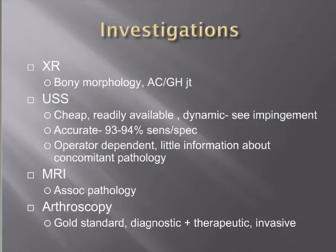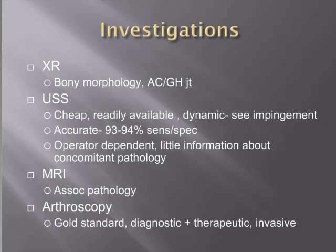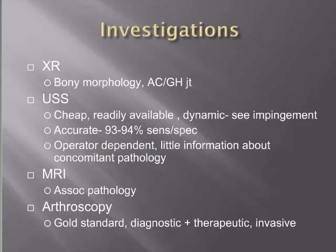Ultrasound accuracy is very good, with 93-94% sensitivity and specificity reproduced in a number of studies. The biggest limitation is that it is operator-dependent. MRI is useful for associated pathology; in partial thickness tears it is less critical, but more relevant for full thickness tears. The gold standard is arthroscopy, which is both diagnostic and therapeutic, though it is a much more invasive modality. Arthroscopic images are shown here — on the left is intra-articular arthroscopy showing an articular-sided tear with the humeral head on the right; the other image from the subacromial space shows the bursal-sided tear.